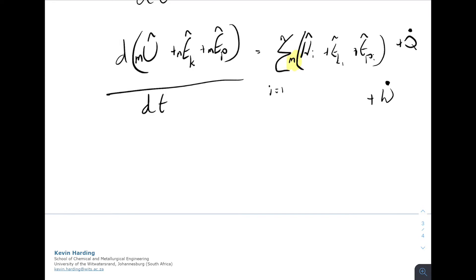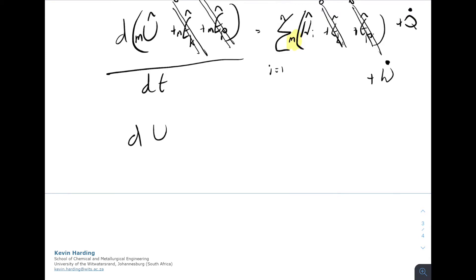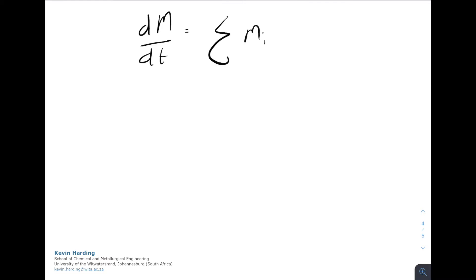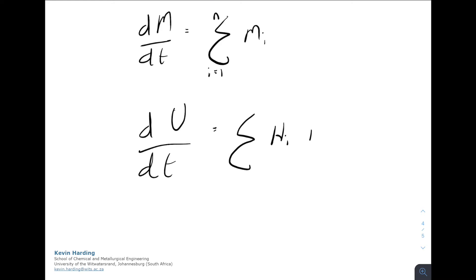For most examples, we assume that E_K and E_P — both on the system side and the flow terms — are zero. The simplified energy balance then becomes: dU/dt = Σ H_i (for i = 1 to n) + Q + W. This is the form of the energy balance we will use for most examples.